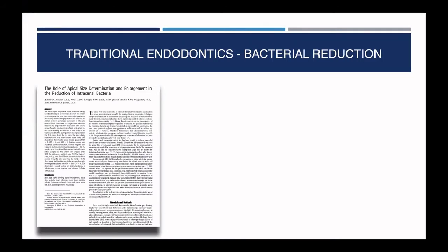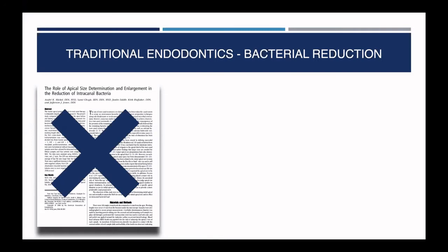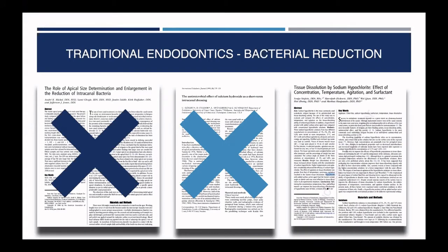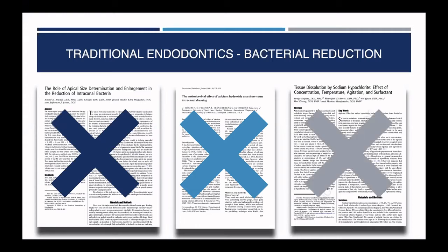I went back and looked at what we do in traditional endo. The first option: open the apex up larger to reduce intracanal bacteria — but we'd had the problem with fractures, so that was not an option. Next: place intracanal dressing such as calcium hydroxide — shown to help, but most patients prefer a single-visit approach. The other option: tissue dissolution by sodium hypochlorite — you can heat it, increase the concentration, leave it in longer, but patients don't want to sit there with their mouth open for two hours. So I began to look at other options.